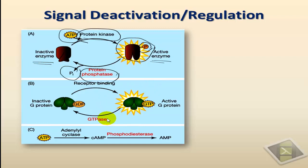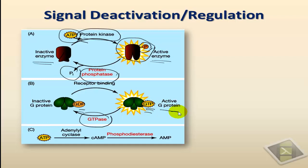Another way is by the use of GTPases. Cells produce GTPases and those break down or hydrolyze GTP into GDP. Specifically, they hydrolyze GTP bound to active G protein, rendering it inactive. That's the second way.